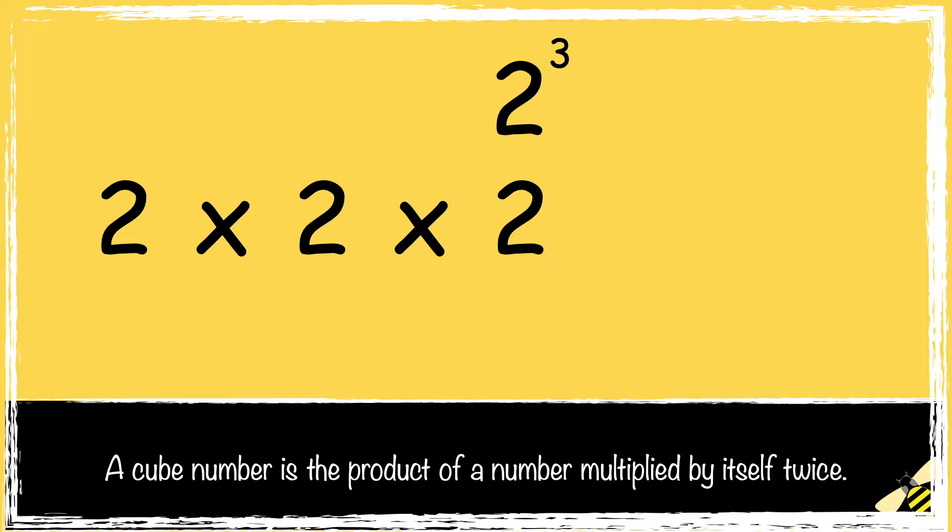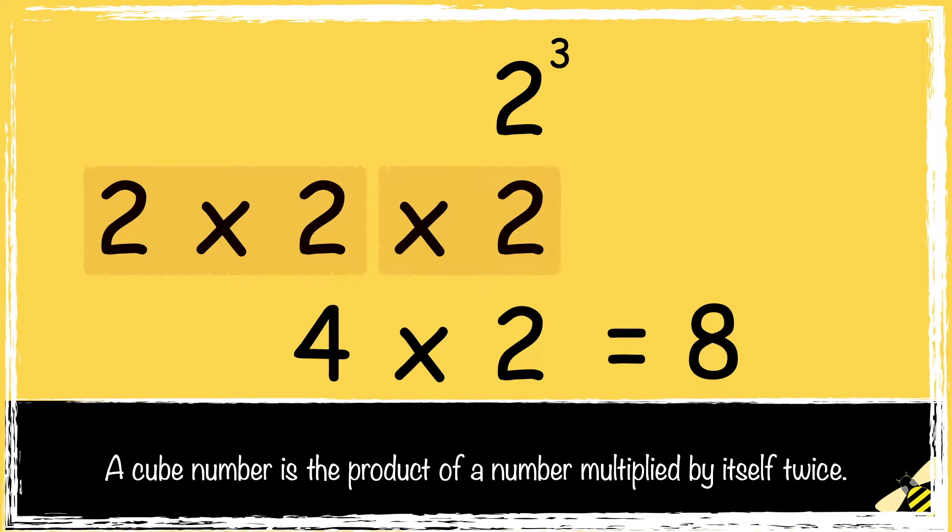Let's look at this example. So first we work out the square number. 2 times 2, which is 4. Then we need to multiply 4 by the original number again. So 4 times 2 is 8. So 2 cubed is 8.